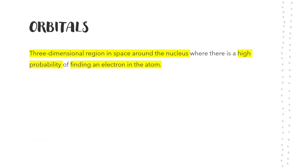Orbitals. What is orbital? We can find orbitals in an atom. Orbital is actually a three-dimensional region in space around the nucleus where there is high probability to find an electron in the atom.